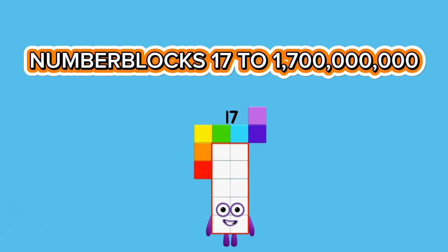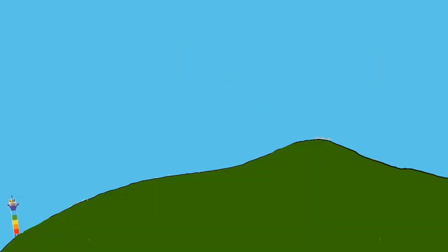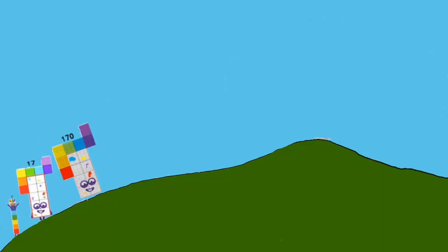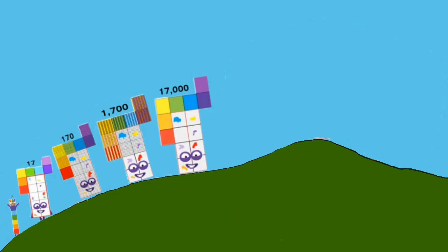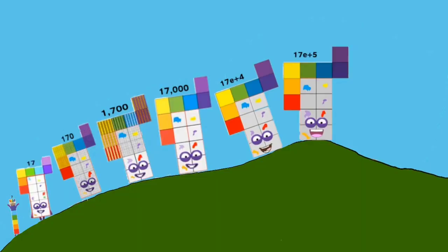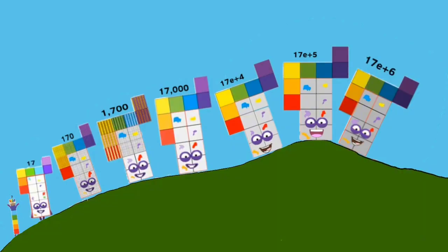Number Blocks: 17 to 1,700,000,000. 17... 17... 1,700... 17,000... 170,000... 1,700,000... 170,000... 1,700,000,700 million.